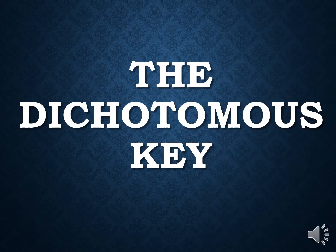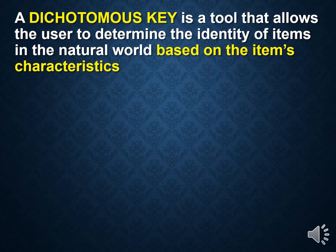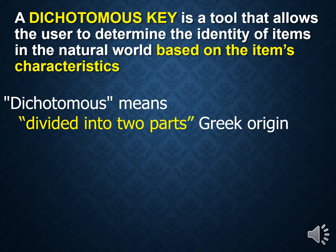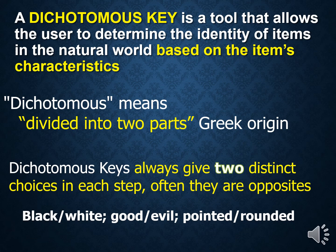Flip your note page to the back and write the words 'dichotomous key.' A dichotomous key is based on an item or living thing's characteristics. It means divided into two parts, and each step gives you a distinct choice. Most of the time, these choices are opposites — like nucleus or no nucleus, backbone or no backbone. Pause the video and write this down on the back page of your notes.